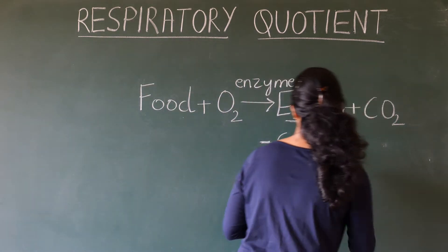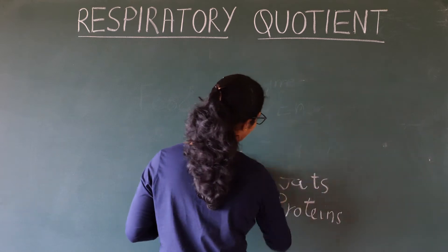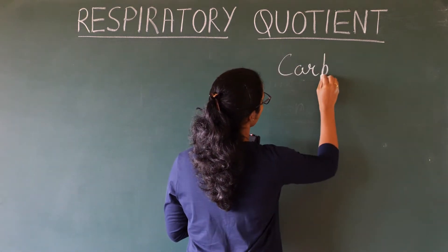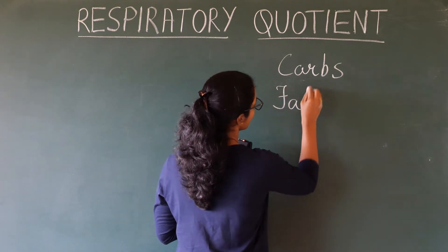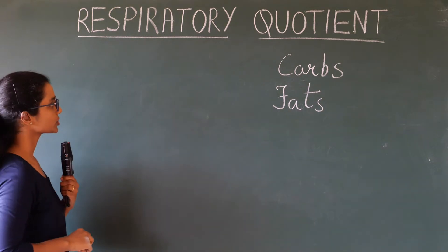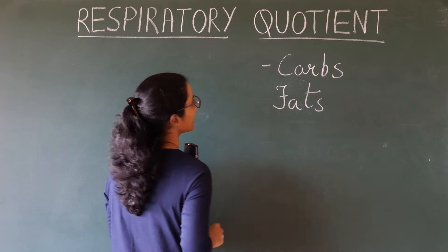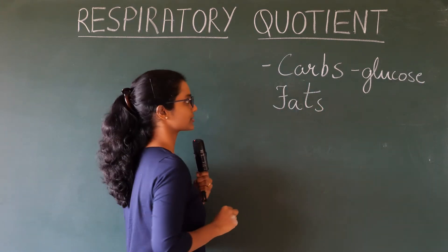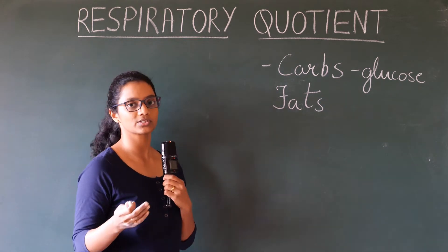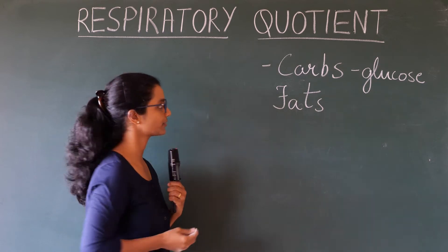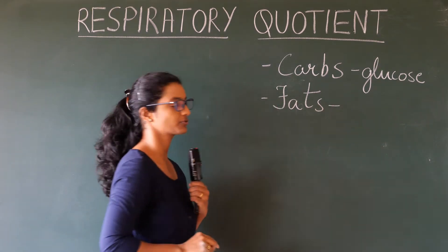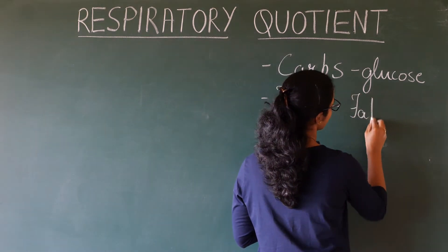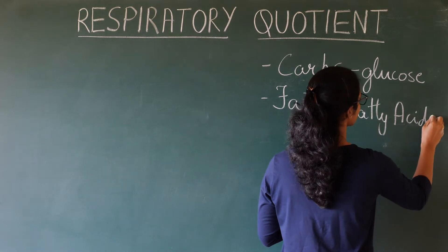We can use either carbohydrates or fats as the source of fuel. When the body utilizes carbohydrates as the source of fuel, it uses glucose — because carbohydrates during digestion break down to smaller units which is glucose, and glucose can be used as fuel. Fats can also be used as the source of fuel. When fats break down, they break down to glycerol and fatty acids, and fatty acids can be used as the source of fuel.